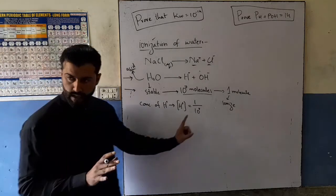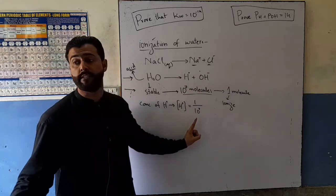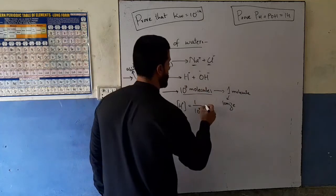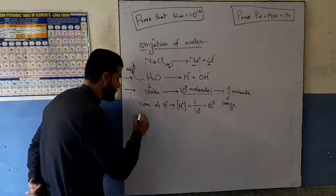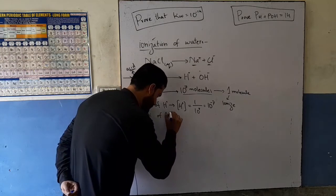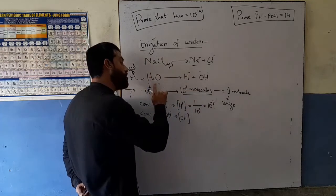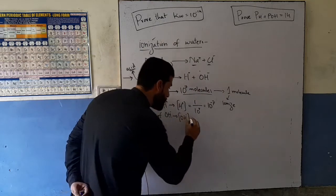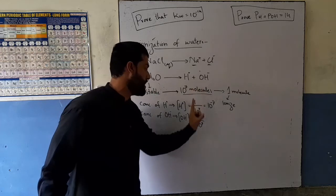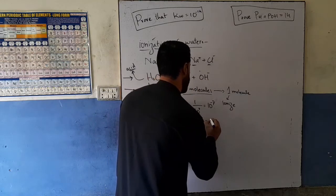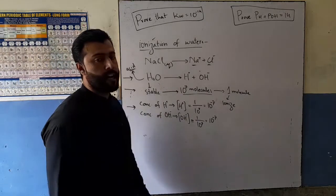So the hydrogen ion concentration shown is one out of 10 to the power 7 — meaning concentration equals 10 to the power minus 7. Similarly, the concentration of hydroxyl ion: since only one molecule out of 10^7 ionizes, the hydroxyl ion concentration is also equal to 10 to the power minus 7.